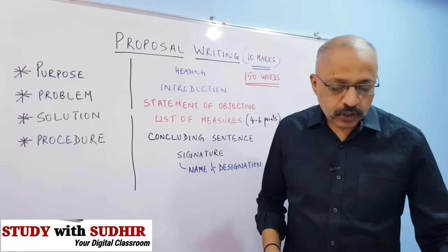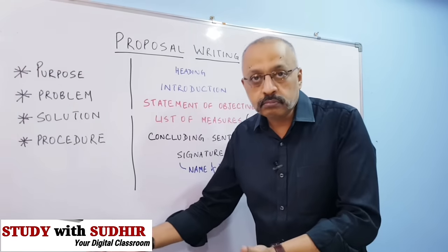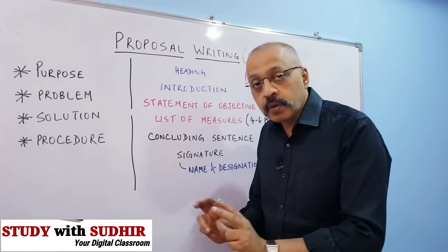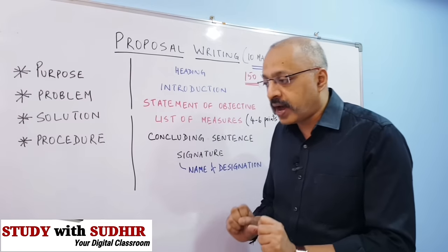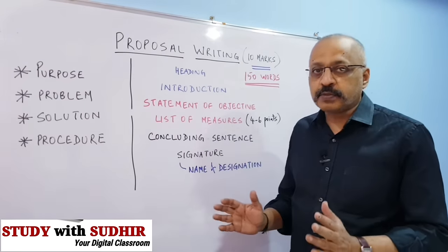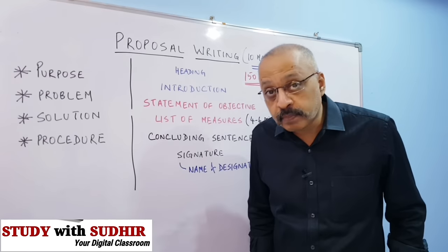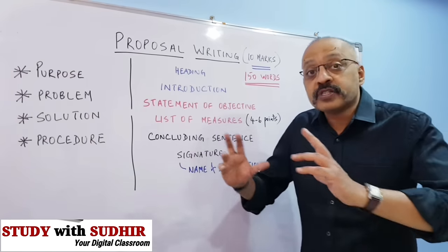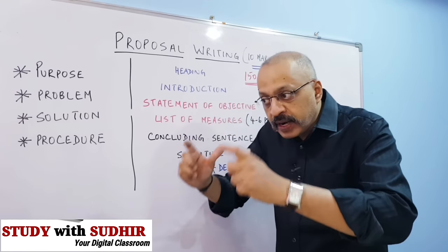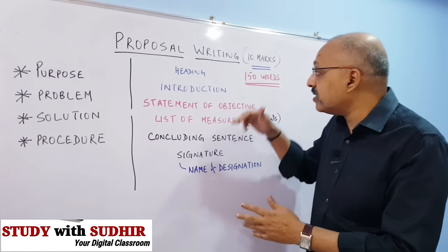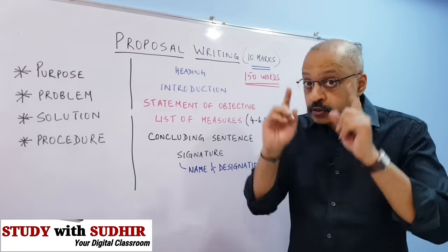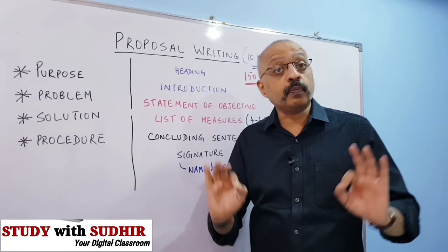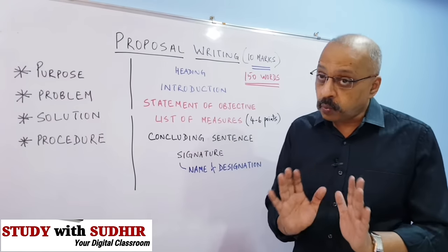Now let's come to the format. You need to write this in 150 words, so it's not too much length. You are not writing a tome — you are writing a very crisp, simple, formal proposal addressed to a higher authority. It has to be crisp because they may be getting 250 proposals and don't have time to read every one in detail. That crispness is the hallmark of a good proposal, which is why the word limit is prescribed as 150 words — please stick to it.